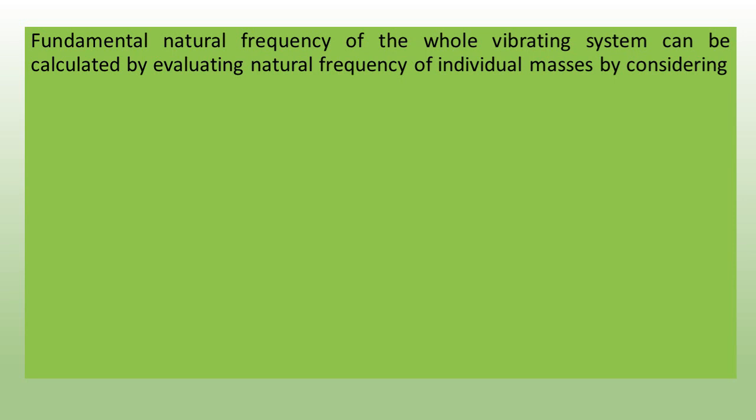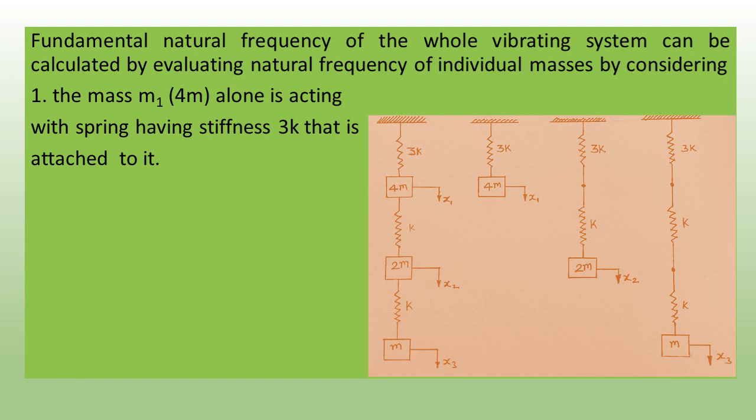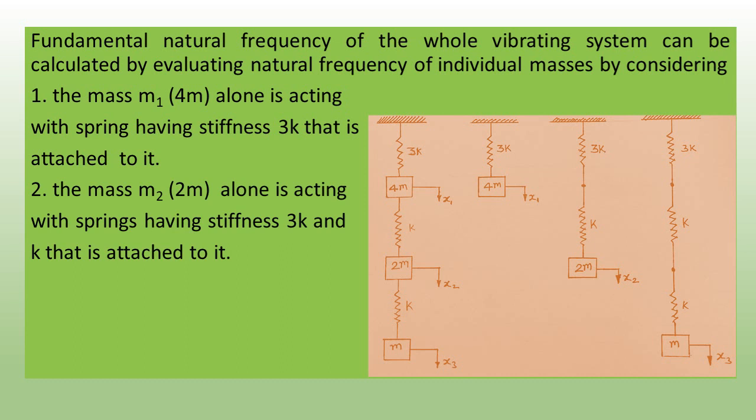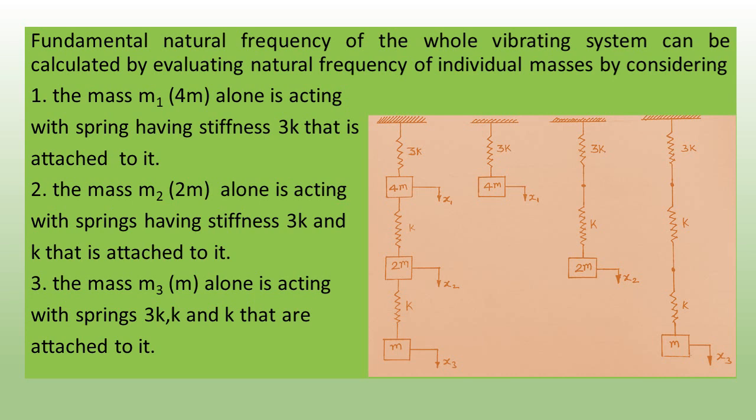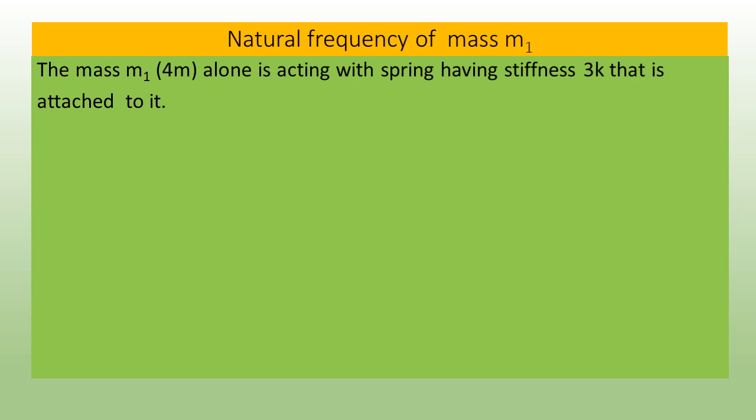The fundamental natural frequency of the whole vibrating system can be calculated by evaluating the natural frequency of individual masses. Mass m1 alone acts with spring stiffness 3k attached to it. Mass m2 alone acts with springs of stiffness 3k and k attached to it. Mass m3 alone acts with springs 3k, k, and k attached to it.